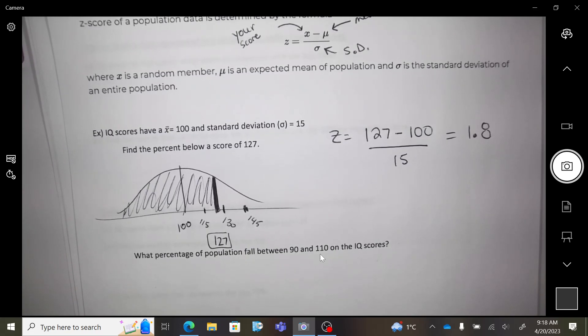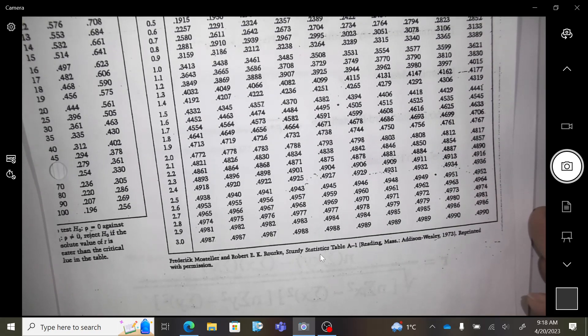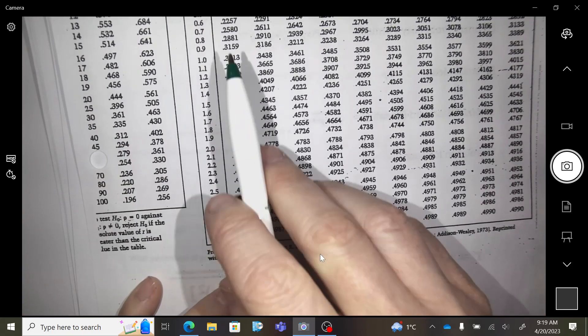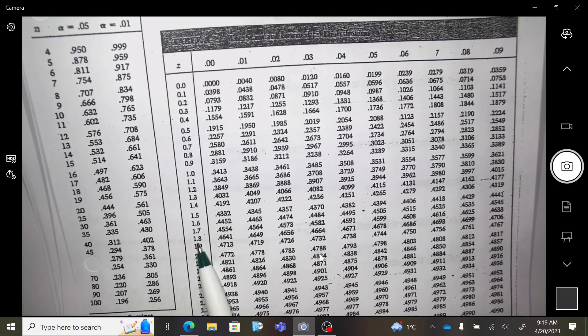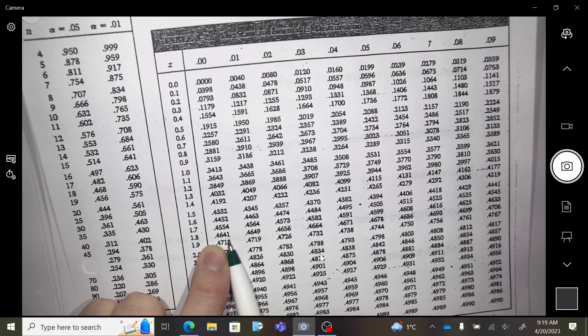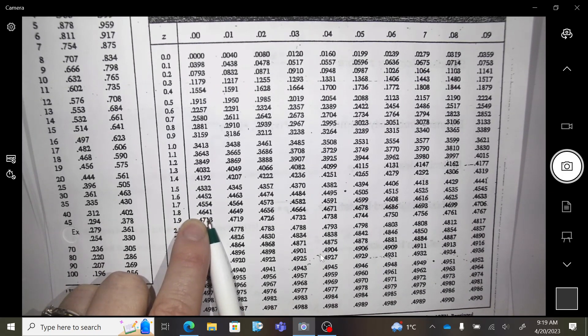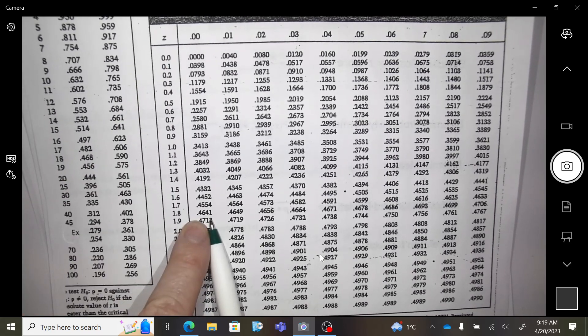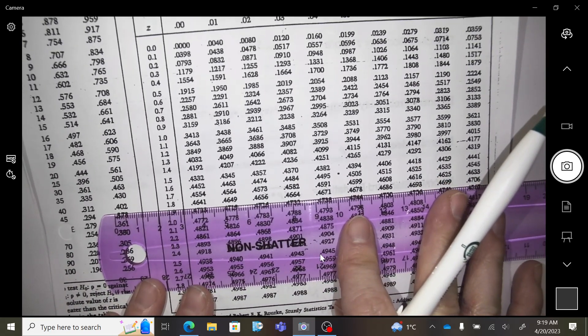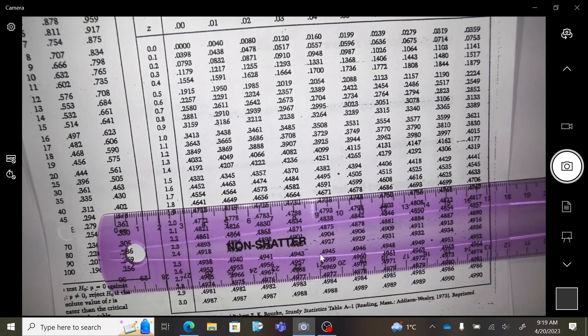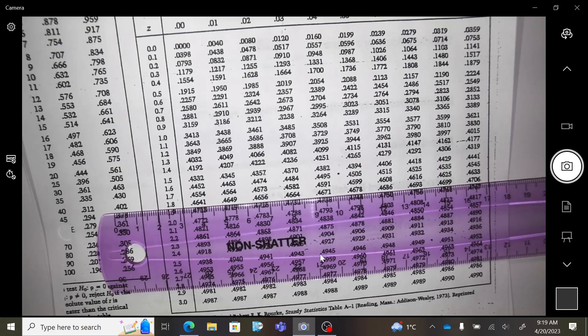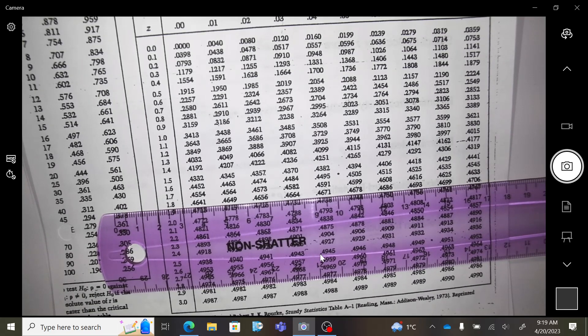Oh, I did a good guess - the z-score is 1.8, exactly 1.8. Okay, now what do we do? We go to this chart that I gave you and we have to find the z-score of 1.8.